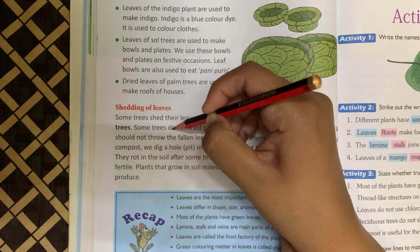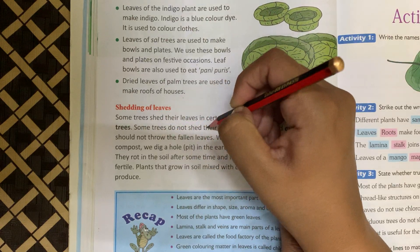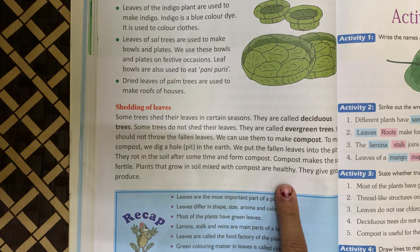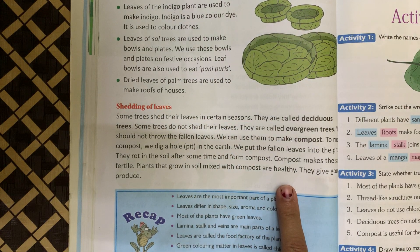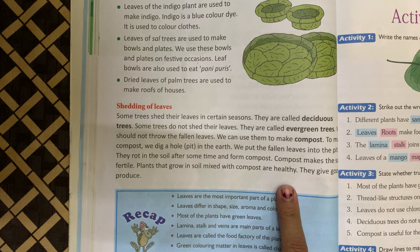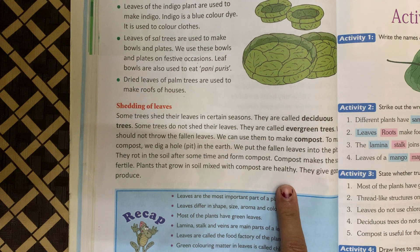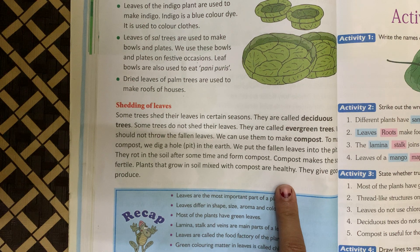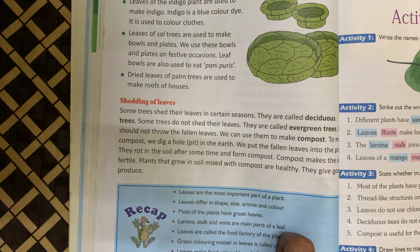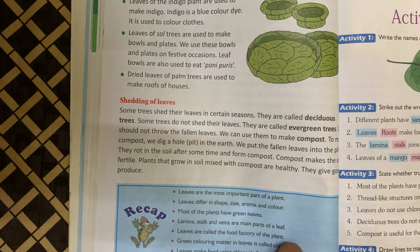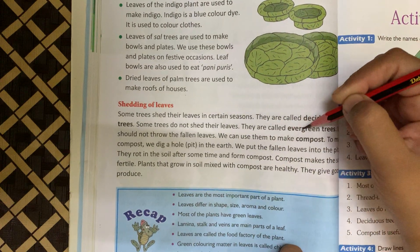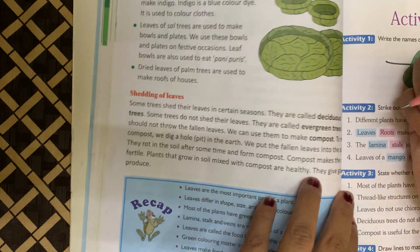Some trees do not shed their leaves. Ab kuch trees aise hote hain jo apni leaves kabhi bhi shed nahi karte, jinki leaves kabhi bhi nahi girti. Un trees ko kya bolte hain? Evergreen trees — jo hamesha green rehte hain. They are called evergreen trees.